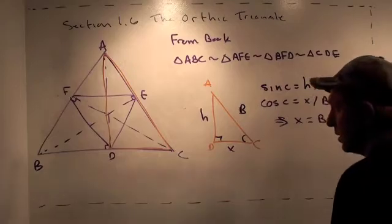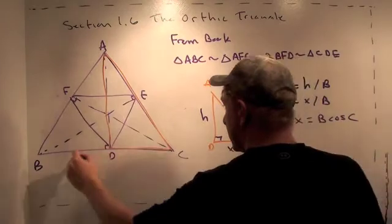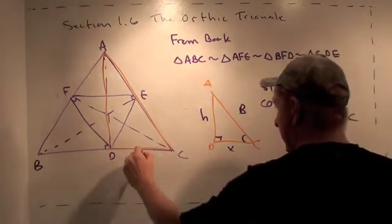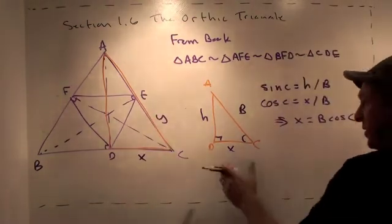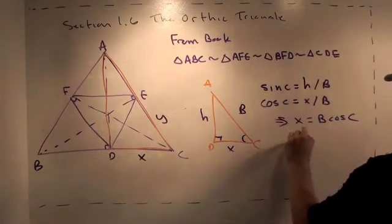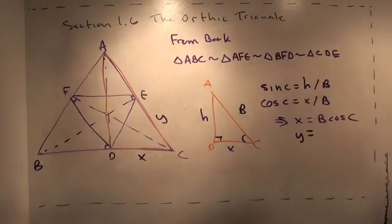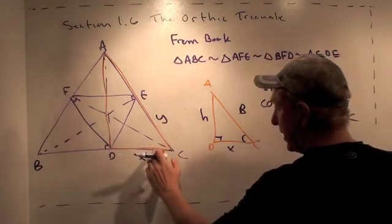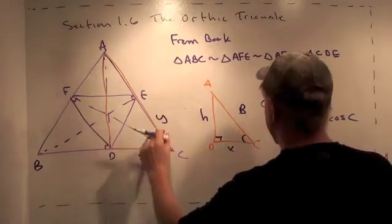Similarly, if we look at triangle BEC, I'll call this Y. So if we look at triangle BCE, we'll learn that Y equals, by the exact same argument, Y equals A cosine C.